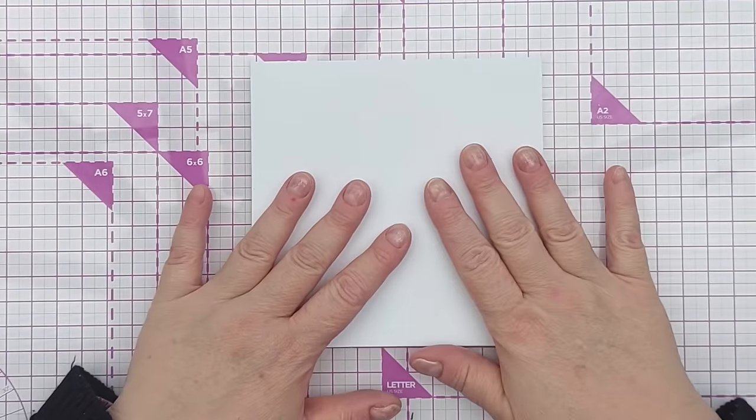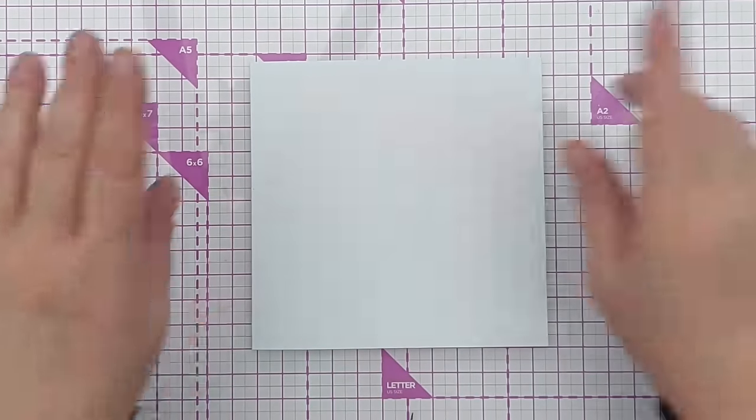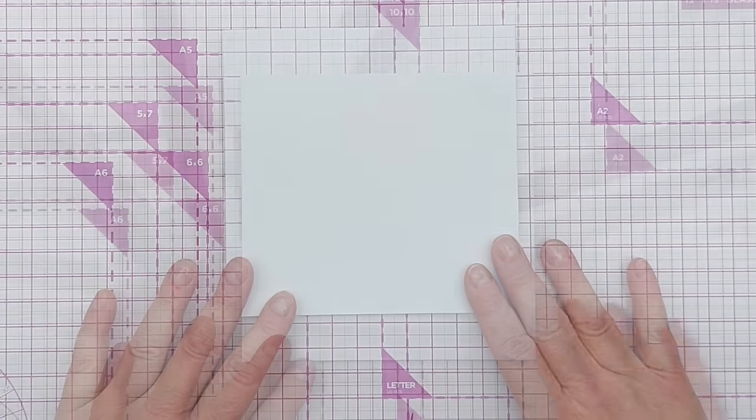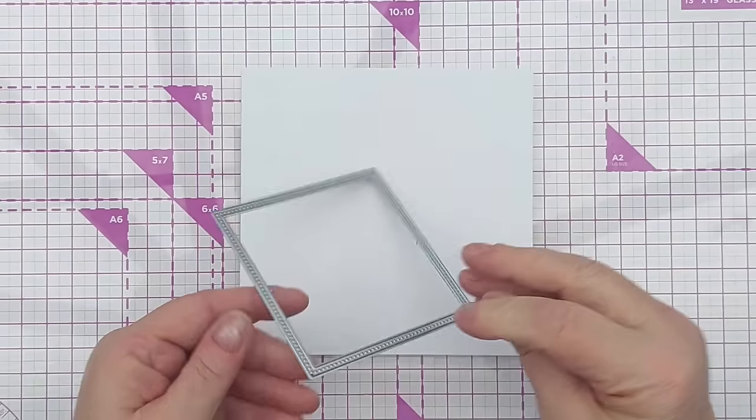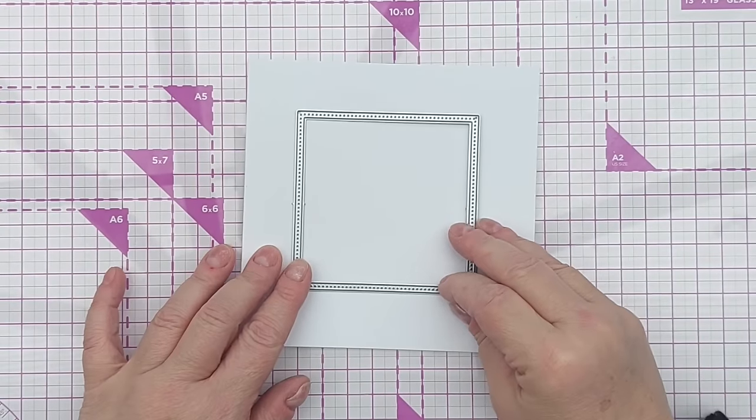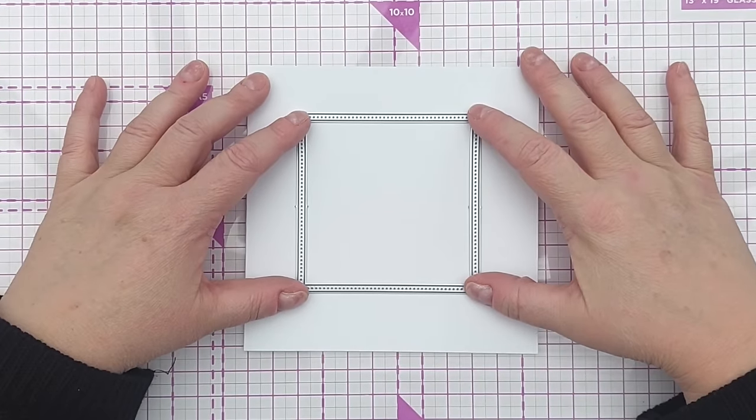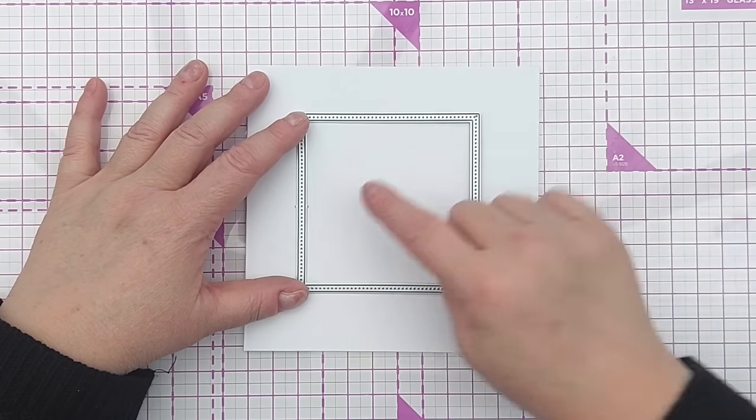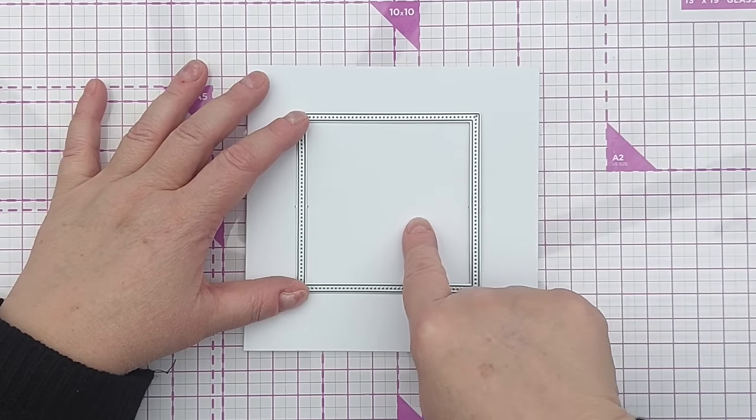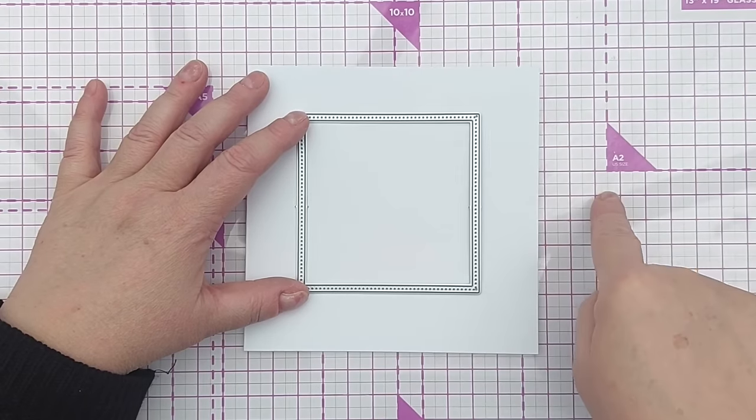My card blank is smooth white cardstock and it's five and three quarters by five and three quarter inches. And what I want to do is to add a frame to the front and I've got this stitched frame die but I'm also going to use the bit that it cuts out to cut my aperture present from.